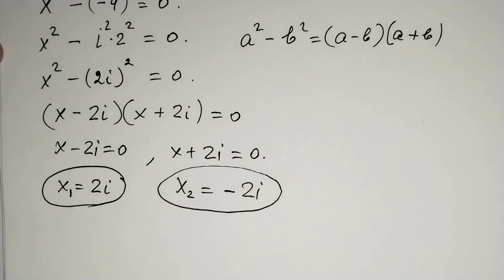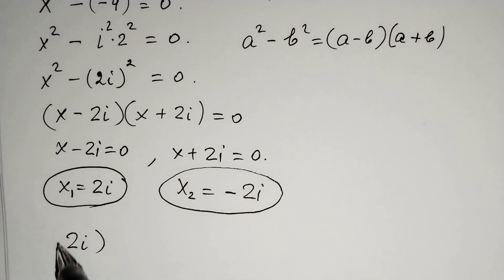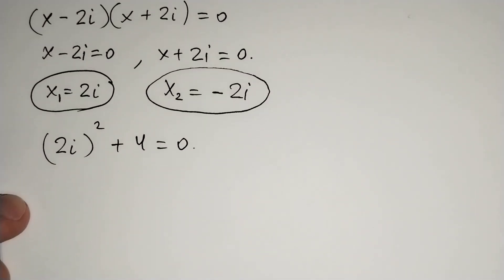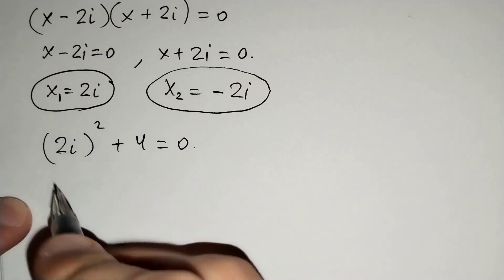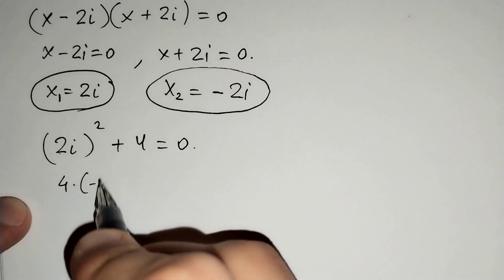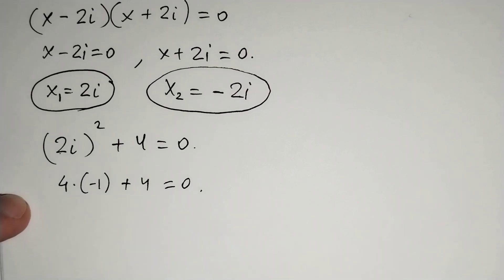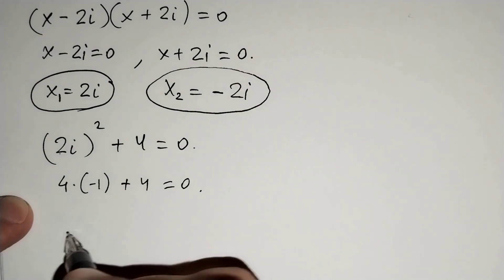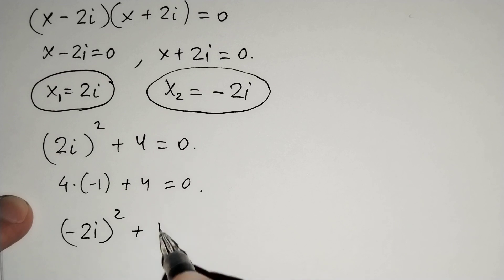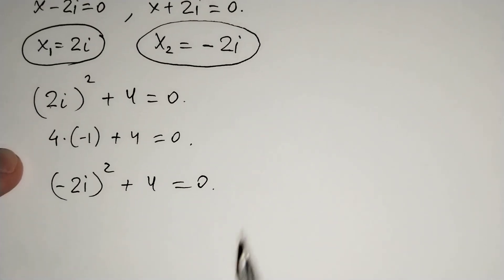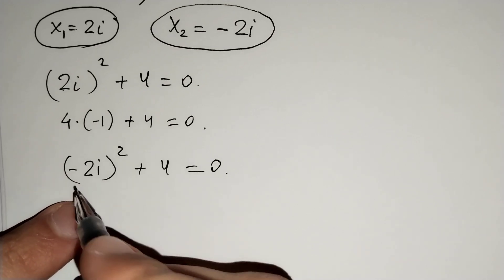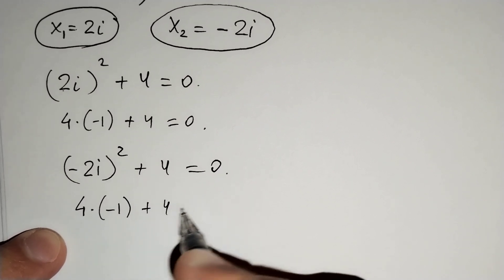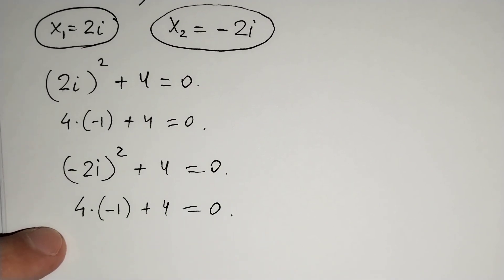Let's check: (2i) squared plus 4 should equal 0. We get 4i squared equals negative 4, and negative 4 plus 4 equals 0. Similarly, (negative 2i) squared equals 4i squared equals negative 4, plus 4 equals 0. Both solutions check out.